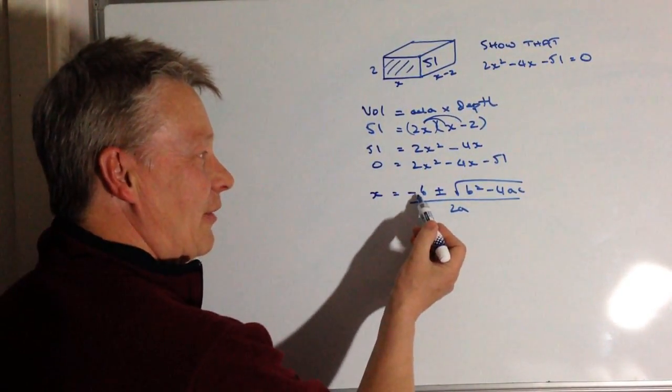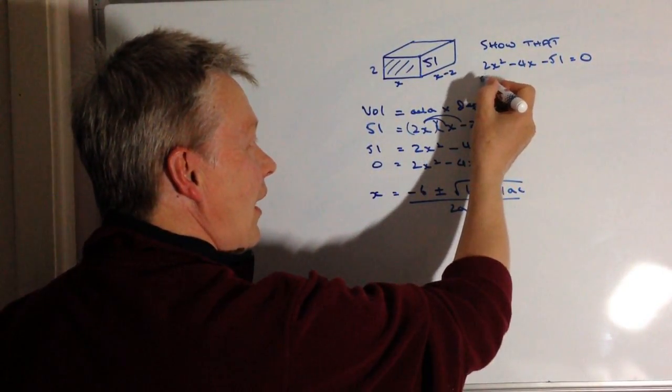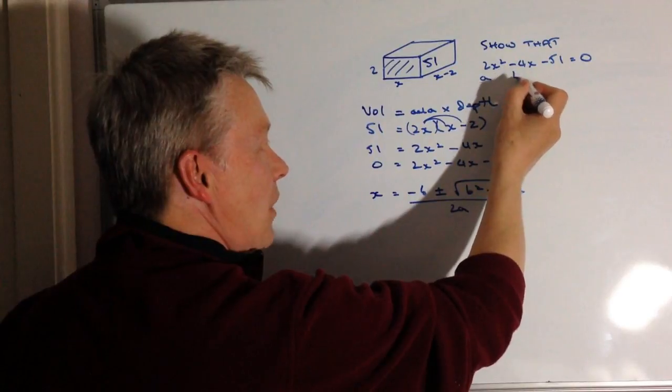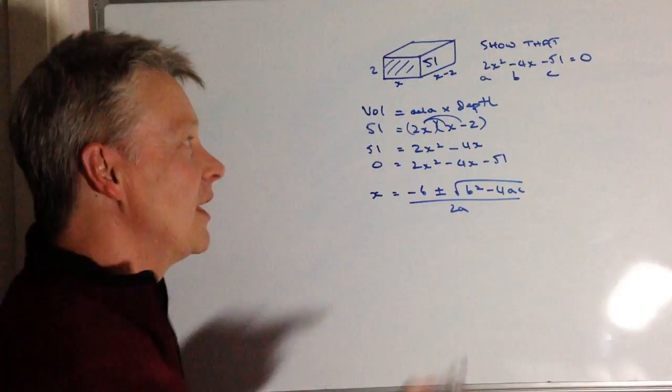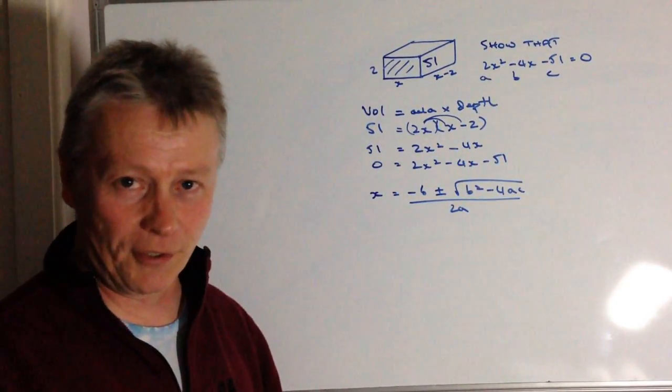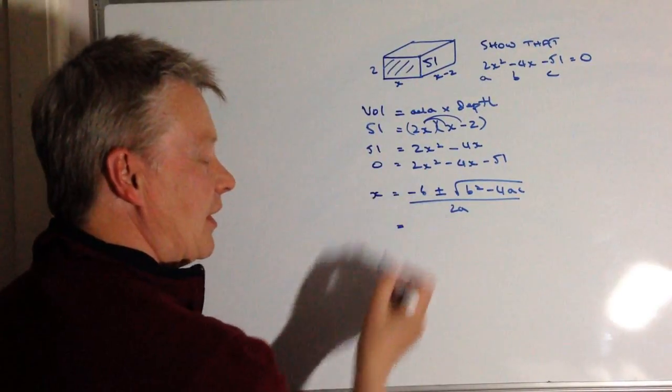So what we've got here is values of a, b, and c. We can say that a is 2, b is minus 4, and c is minus 51. Now be careful about these because these minuses might cause you a little bit of a problem. So the first thing is I'm going to plug this in.